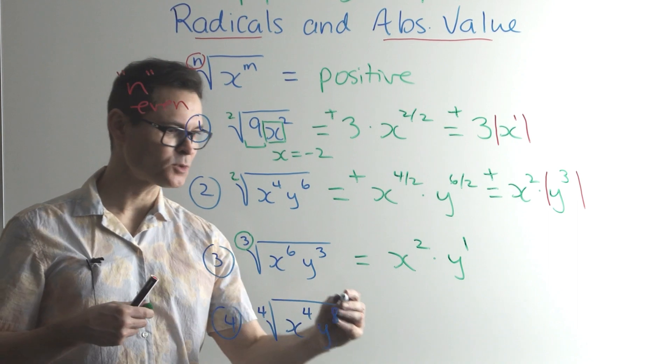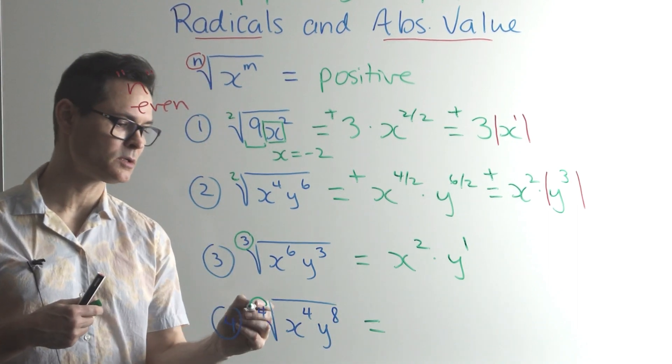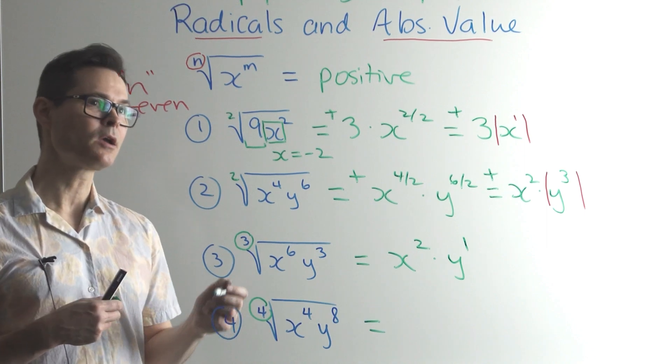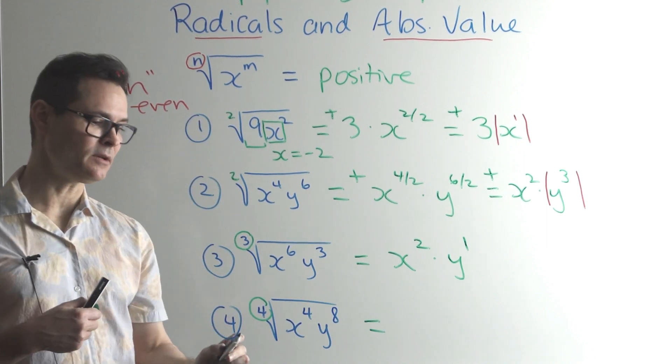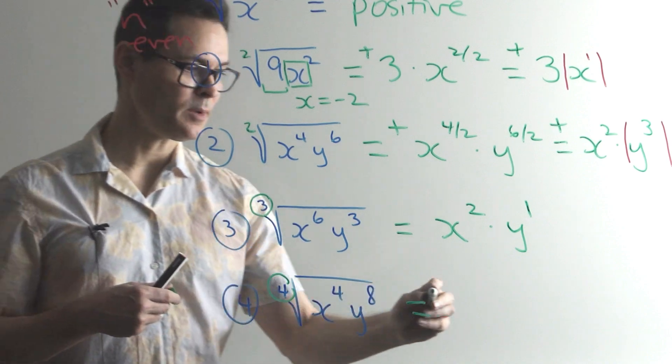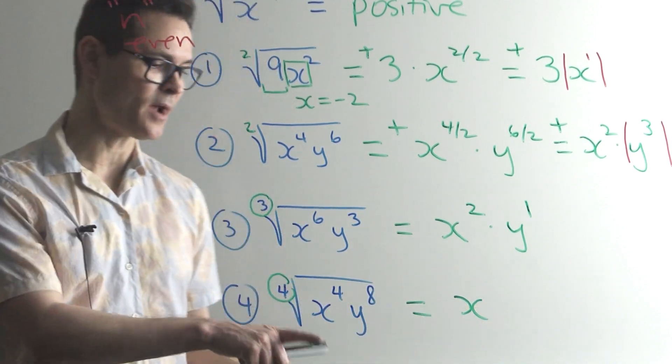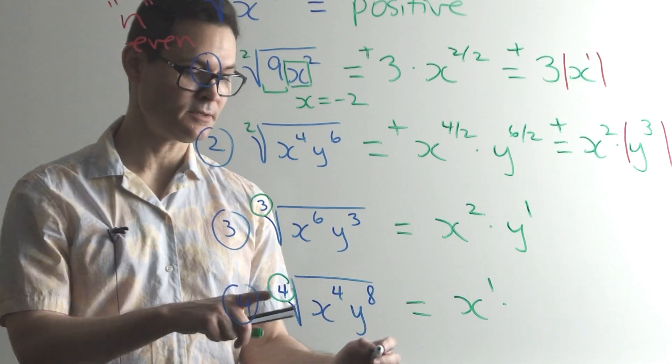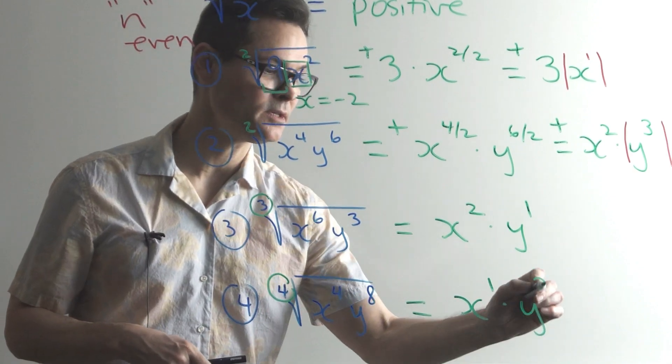And now the last one here, this one looks like it could be important to consider because, look, the index is 4. So if the index is 4, again, n is even. 4 is even. So we tread carefully here. So x, 4 over 4 is 1. And y to the 8, 8 divided by 4 is 2.